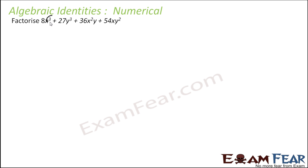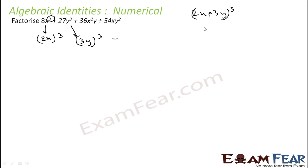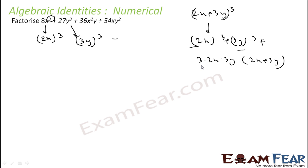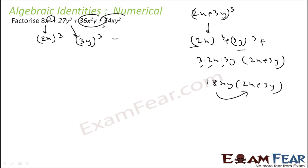So we have to factorize this expression of degree 3. Let's see if we can use some algebraic identity. This term is actually (2x)³ and this is (3y)³. Just out of curiosity, let's check (2x + 3y)³: it becomes (2x)³ + (3y)³ + 3 × 2x × 3y × (2x + 3y), which gives 36x²y and 54xy². So this expression is exactly (2x + 3y)³.